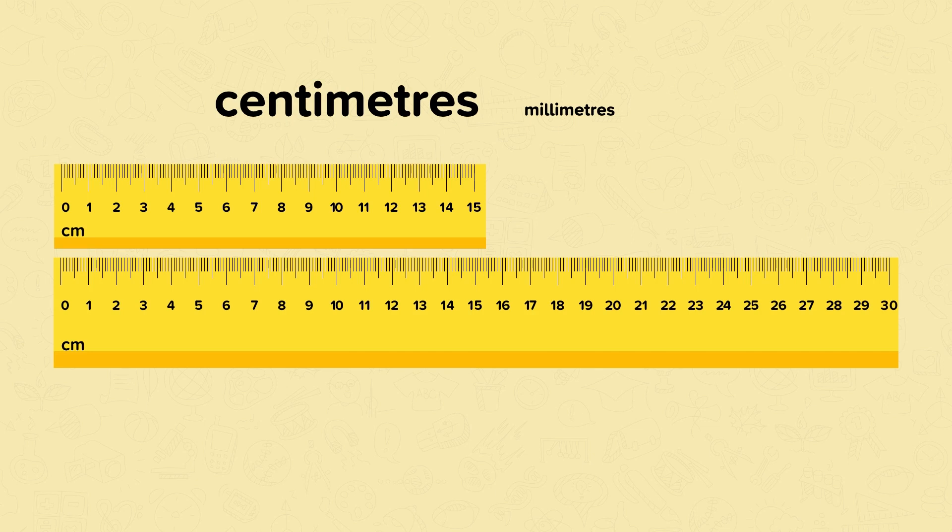The first ruler will allow us to measure things up to 15 centimetres. The second ruler is longer. It can be used to measure things up to 30 centimetres.